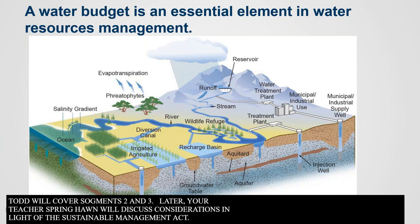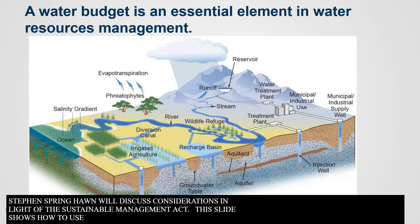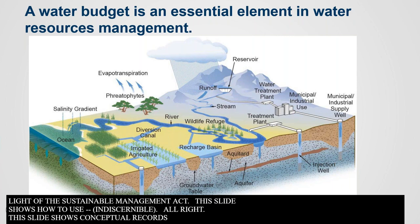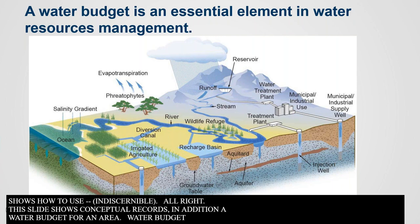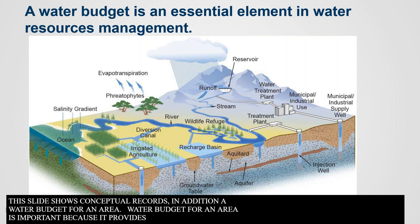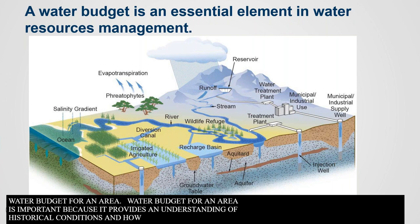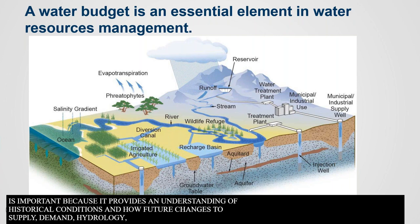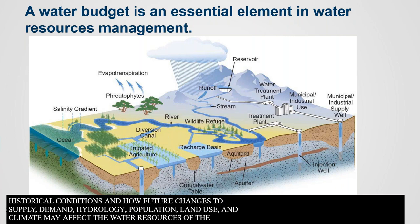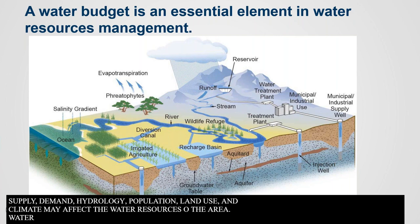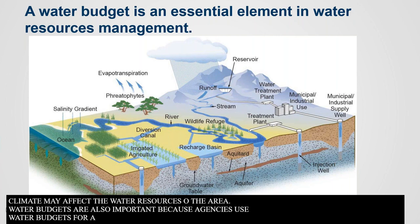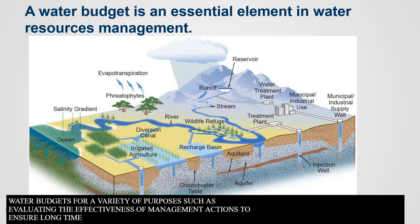This slide shows a conceptual representation of a water budget for an area. A water budget is important because it provides an understanding of historical conditions and how future changes to supply, demand, hydrology, population, land use, and climate may affect the water resources of the area. Water budgets are also important because water agencies use them for a variety of purposes, such as water supply planning and evaluating the effectiveness of management actions to ensure long-term sustainability of surface water and groundwater resources.